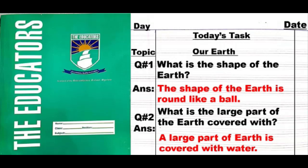Question number 1. What is the shape of the earth? Zameen ki shape kaisi hoti hai? Answer: The shape of the earth is round like a ball. Zameen ki shape gend ki tarah gol hoti hai.